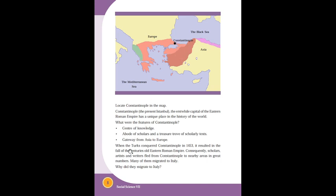When the Turks conquered Constantinople in 1453, it resulted in the fall of the centuries-old Eastern Roman Empire. Consequently, scholars, artists, and writers fled from Constantinople to nearby areas in great numbers, and many of them migrated to Italy.